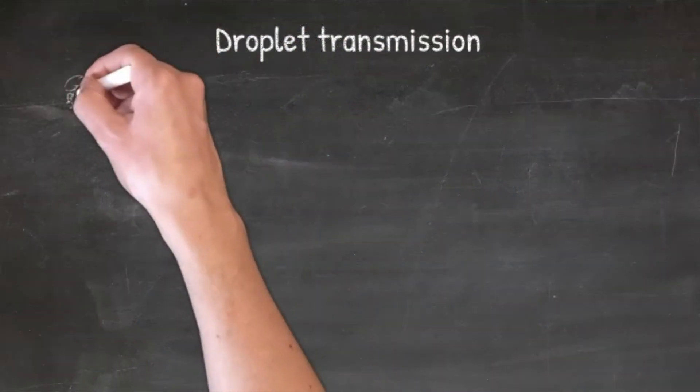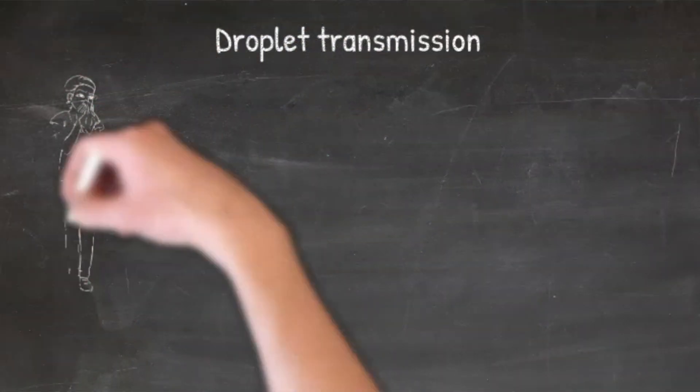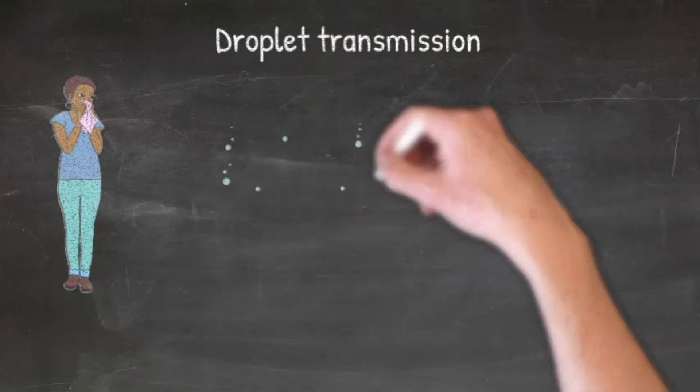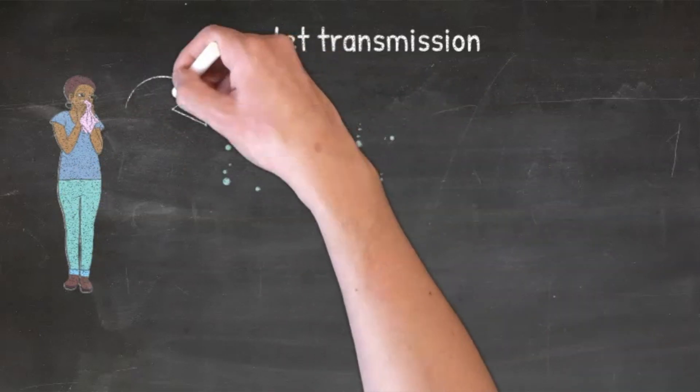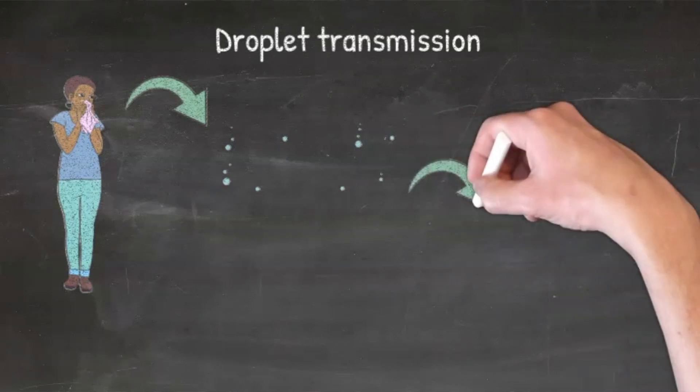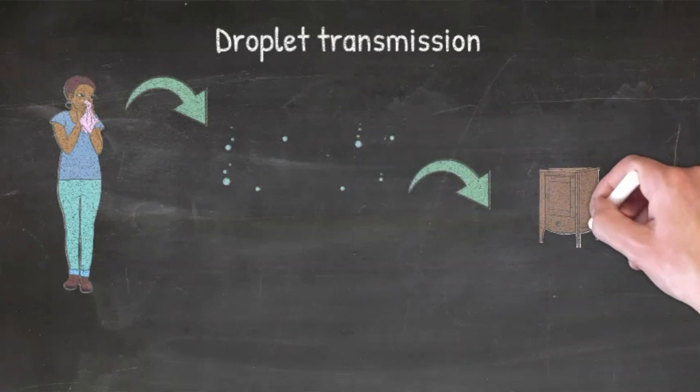The virus invades your body and starts replicating, causing symptoms such as fever, cough, and shortness of breath. The indirect way of transmission is when these droplets fall on surfaces and somebody else touches those surfaces, then inadvertently touches their face, infecting themselves.